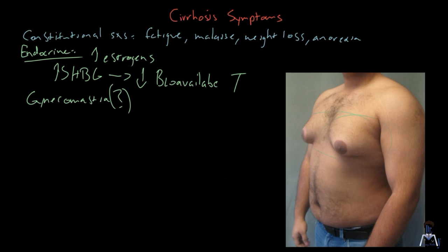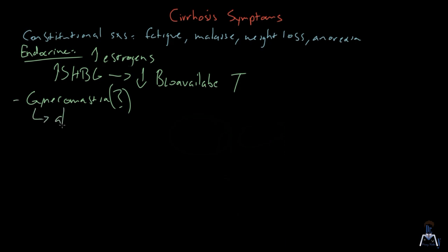An estrogenic state with aldactone may be problematic to a cirrhotic patient. This is what gynecomastia looks like, an increase in breast tissue. Also, if alcohol is the cause of the cirrhosis, alcohol itself acts on Leydig cells and inhibits testosterone that way.